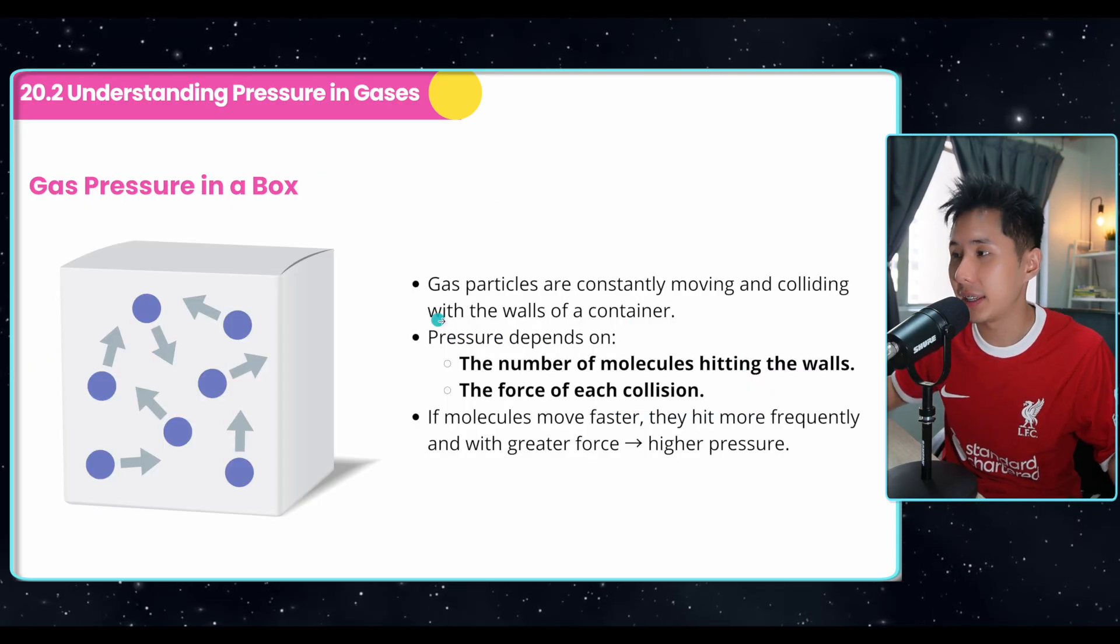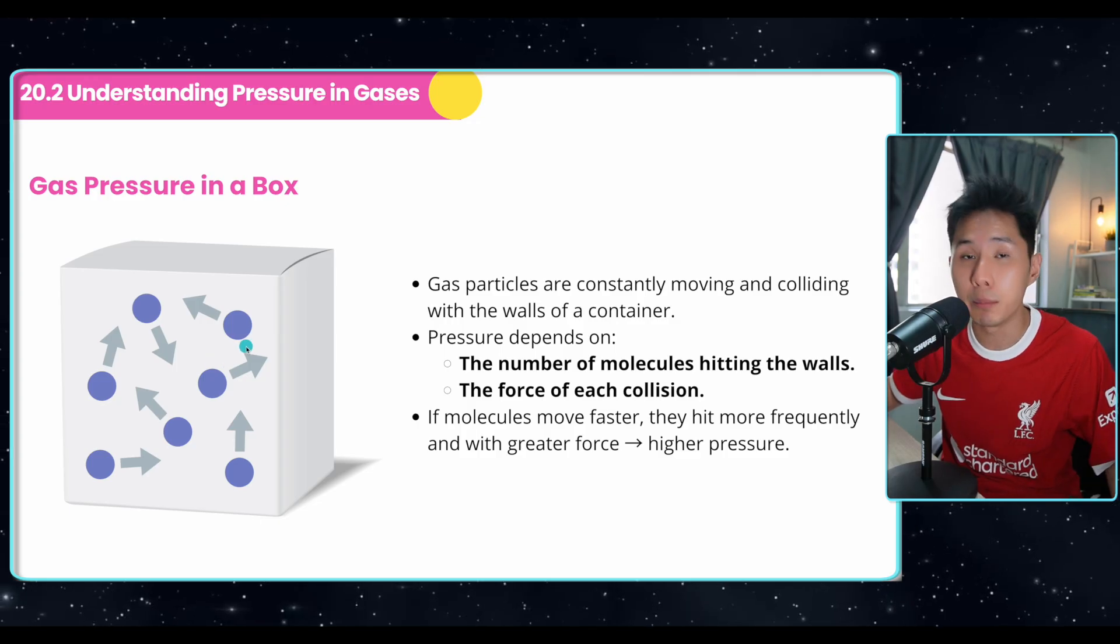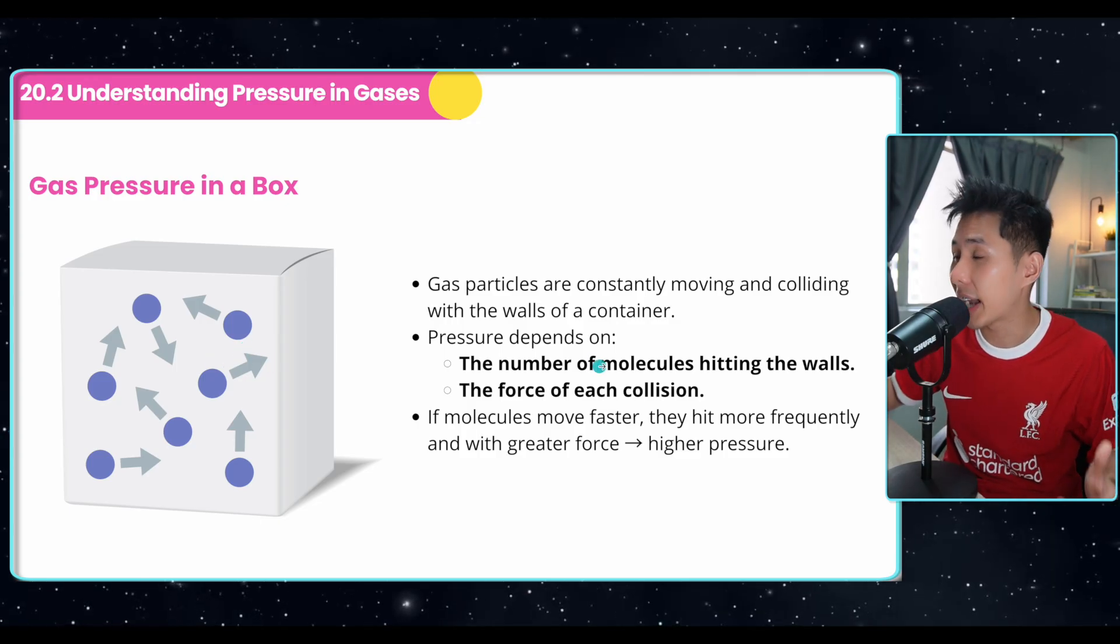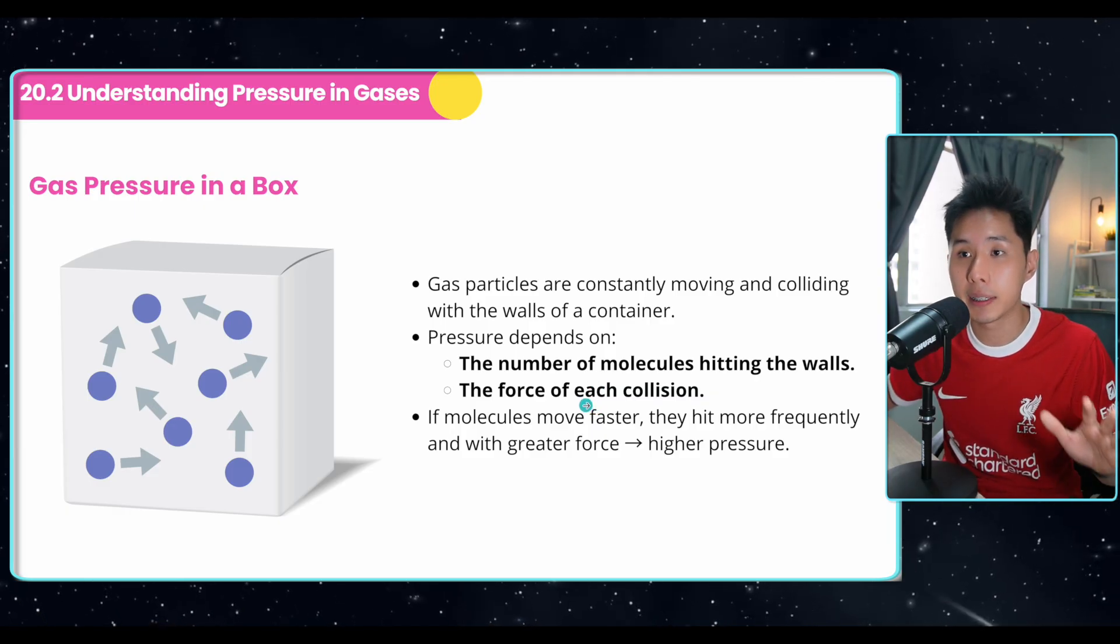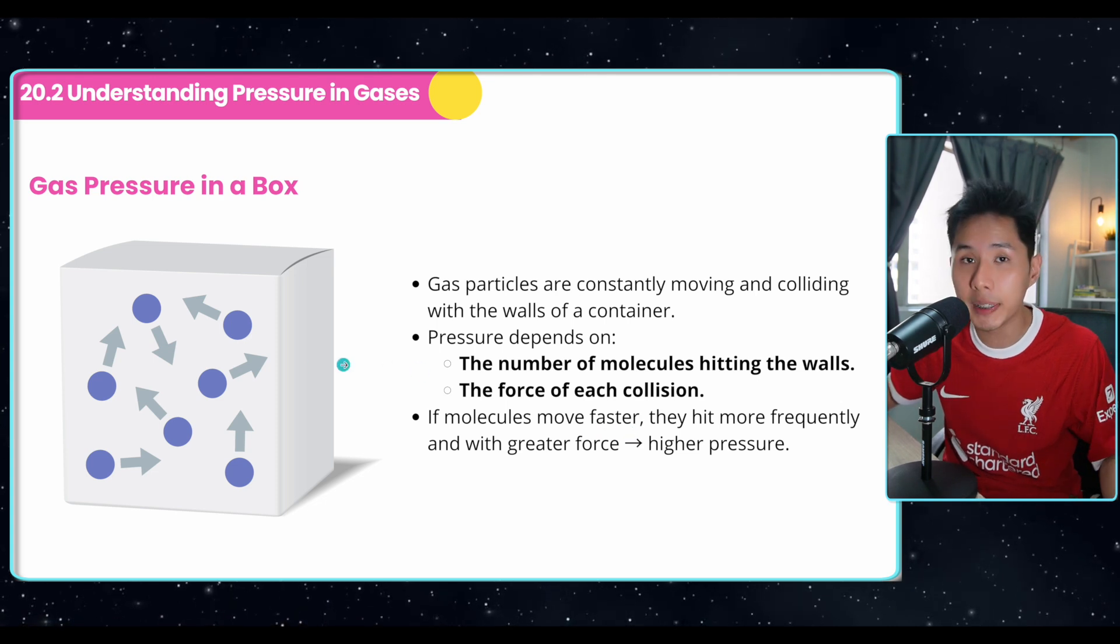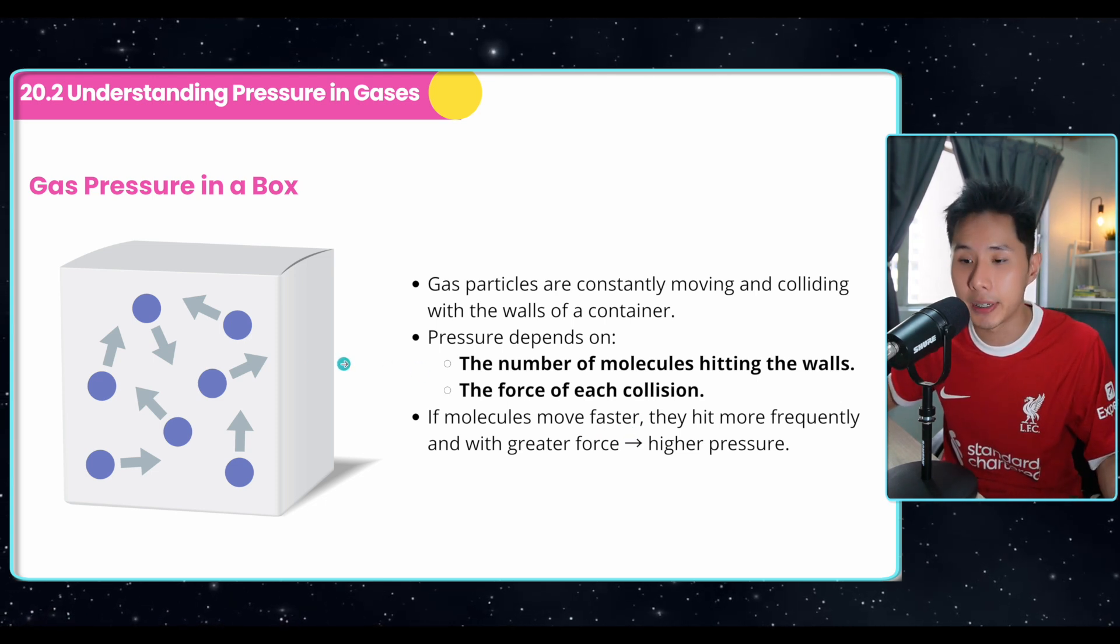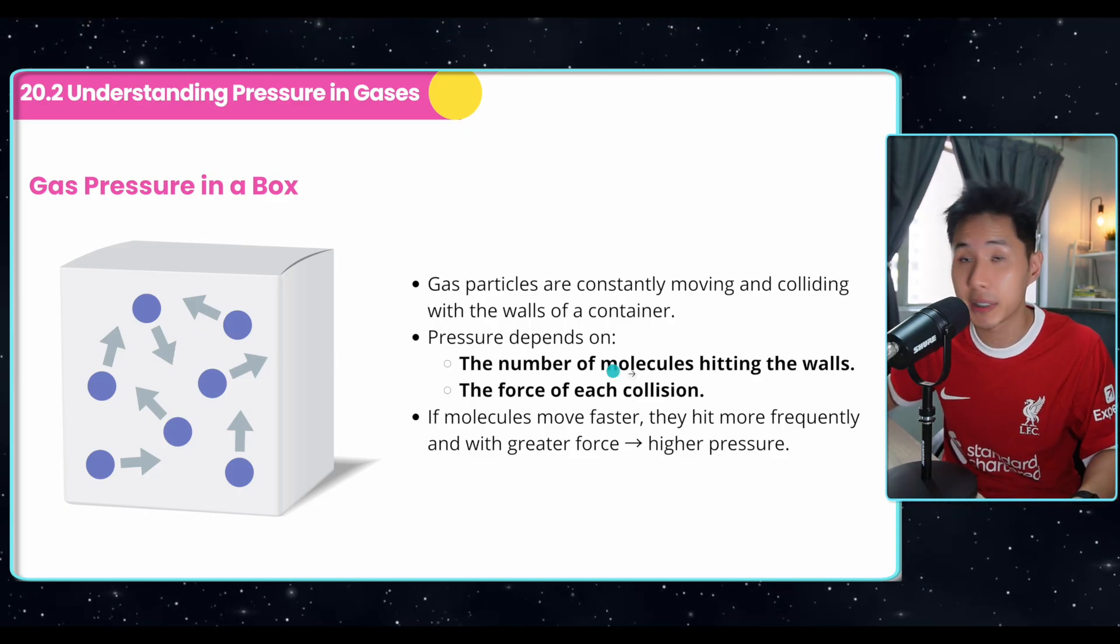Now I want you to picture that these gas particles, they are in the box, and they're constantly moving and colliding. As they collide with the wall, they exert pressure on the wall. Because if you look at the formula for pressure, it's force over area. And if molecules move faster, they hit more frequently, and as a result, higher pressure. In other words, the faster they move in this box, the more pressure they'll be exerting on the box.